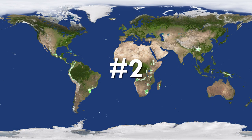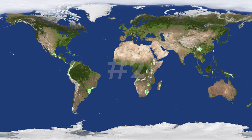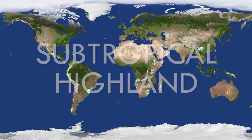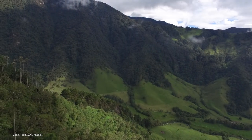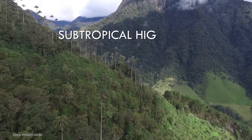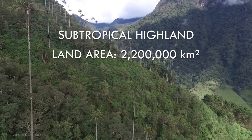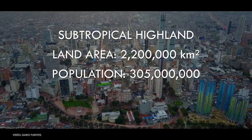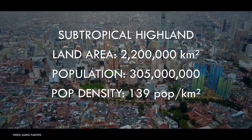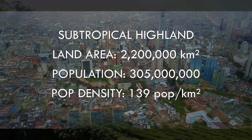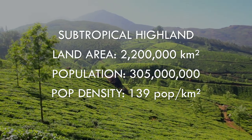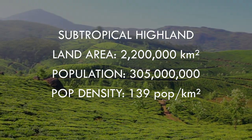At number 2, we have the last in the trio of small climate zones, that of the subtropical highlands. Nestled in the uplands of the tropics, enjoying year-round mild temperatures and being free from much of the diseases of the tropics, it's no wonder that this zone supports a population density four times that of the tropical rainforest, and 50% more than the tropical wet and dry climates. Major cities such as Mexico City, Bogota, Quito and Addis Ababa are surrounded by fertile farmland where the majority of the world's coffee and tea are grown.